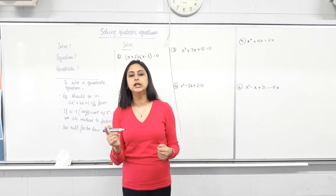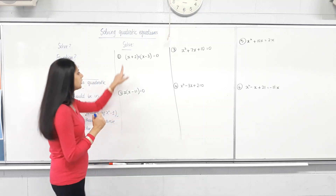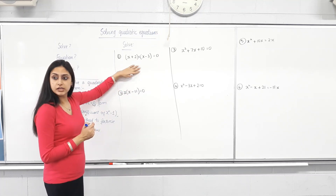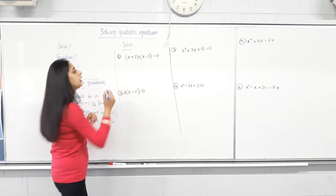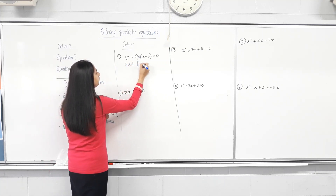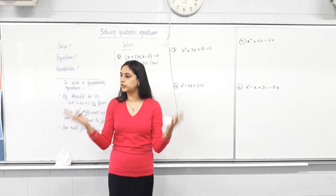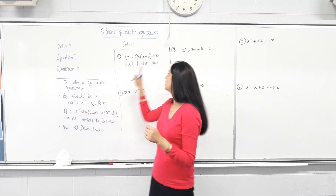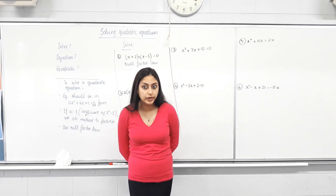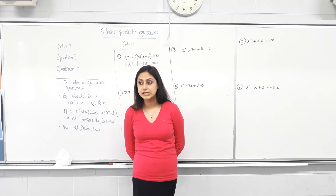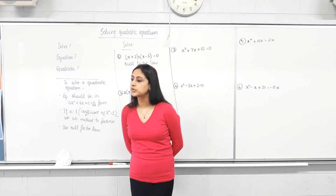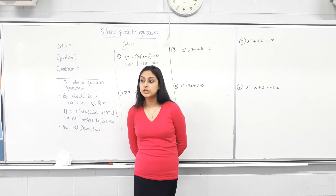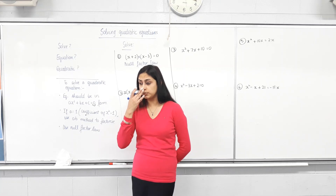Null factor law — because we've done factorizing and rearranging, now we're doing null factor law. Let's look at this question. Is everything on the left-hand side? Zero on the right? Is it factorized? Two brackets with a times sign between them? Yes. So I can move on to the next step. Null factor law is such a simple and logical law. Think of two numbers that times together to give you zero. Everyone think of two numbers that multiply together to give you zero.